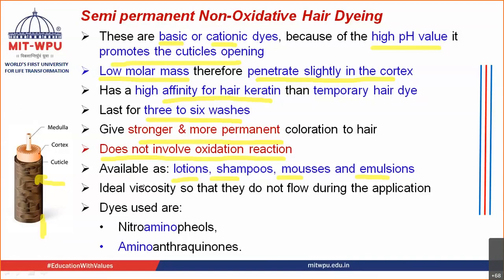They should have ideal viscosity — any hair dyeing shampoo should have ideal viscosity so they do not flow during the application. When you are applying, they should not flow off, and the ideal viscosity is very important. Dyes that are used here are nitroaminophenols or aminoanthrophenols — these types of dyes are being used in case of semi-permanent non-oxidative hair dyeing system.